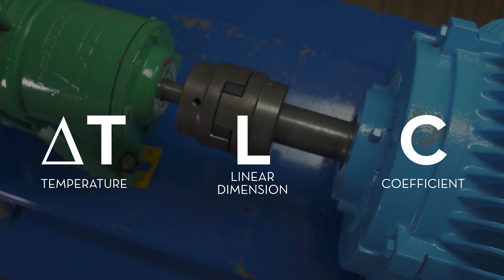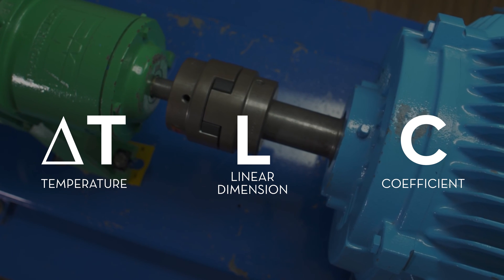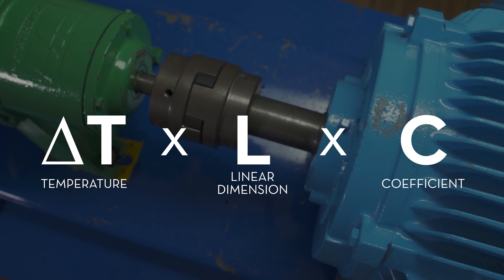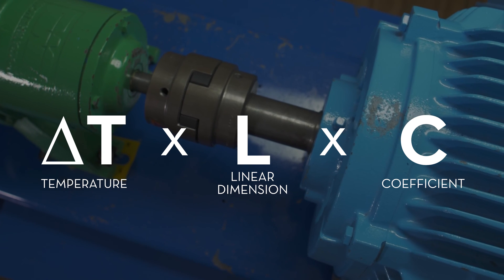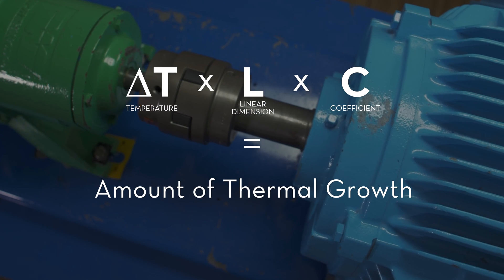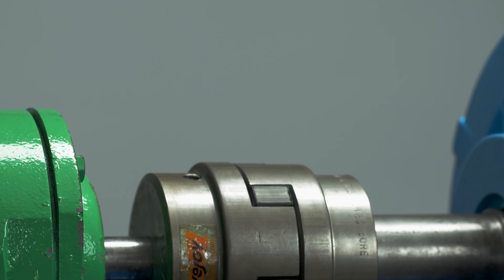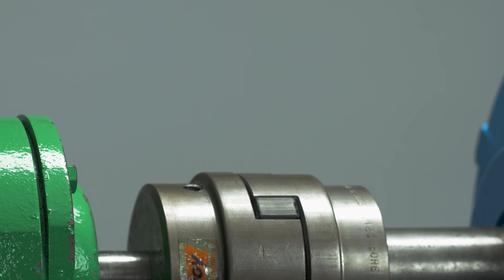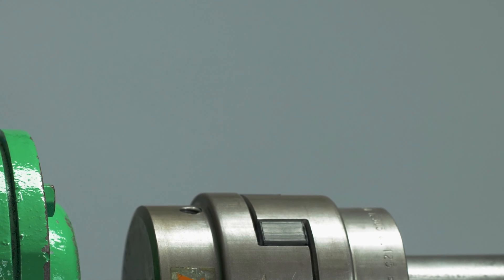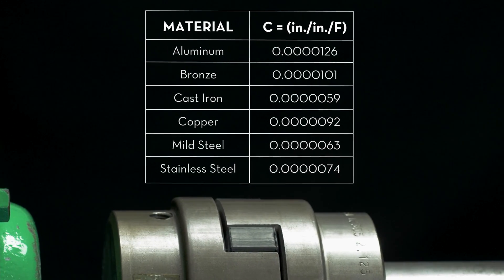These three elements are multiplied in the following equation: delta T times L times C. This is equal to the amount of thermal growth in the machine. In order to find the coefficient of linear thermal expansion for common types of machine metals, refer to the following chart.